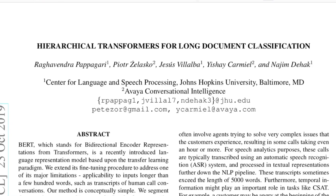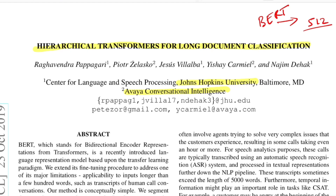Welcome to the new video. Today we'll be talking about this paper titled 'Hierarchical Transformers for Long Document Classification', from authors at Johns Hopkins University and Avaya Conversational Intelligence. This paper talks about using the original BERT model by extending its fine-tuning procedure to address the long document classification problem, overcoming the limitation of dealing with just 512 tokens at a time. Nowadays you have models like Longformer and XLNet that can do classification for long documents.